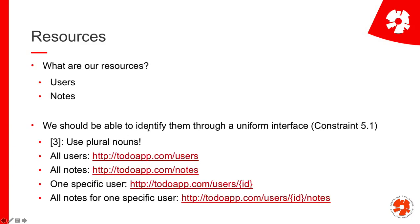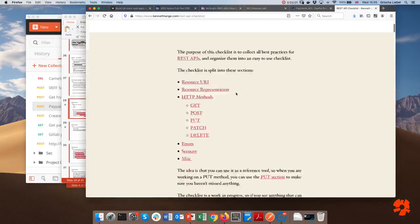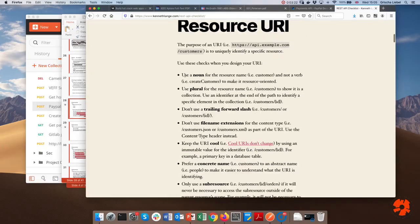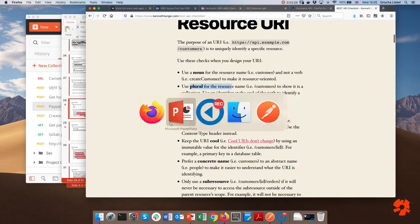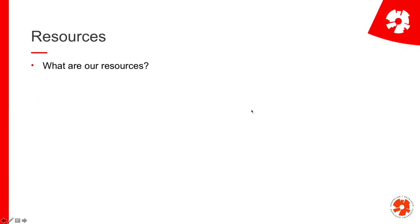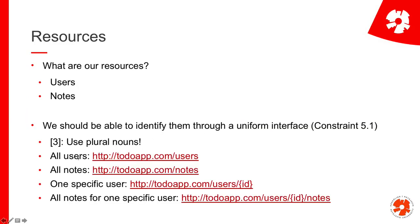Now we go into the different constraints. Constraint 5.1 says we should be able to identify our resources through a uniform interface. Looking at the checklist, one recommendation is to use a noun for the resource name and use the plural. So if we want to access our users, we do /users — http://todo-app.com/users — that gives us access to all the users. If we want to access all the notes, we do /notes. If we want to access one specific user, we do /users/id — so for user number five, we'd do /users/5.